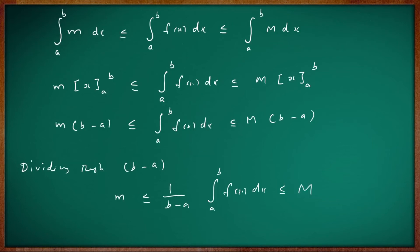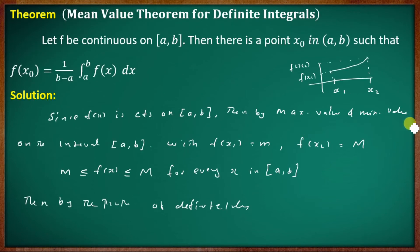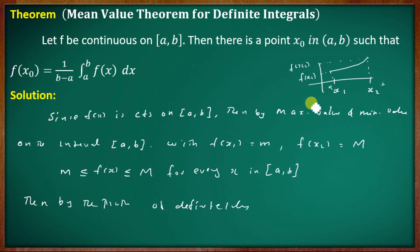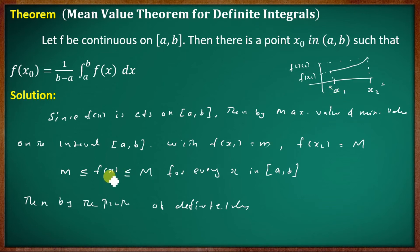To summarize the proof: the mean value theorem uses the maximum and minimum values. We have x₁ as the minimum point with corresponding value f(x₁) = m, and x₂ as the maximum point with f(x₂) = M. This gives m ≤ f(x) ≤ M for all x in [a, b].